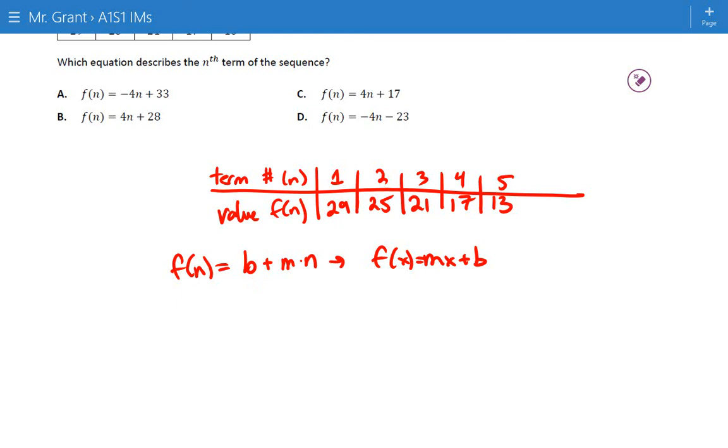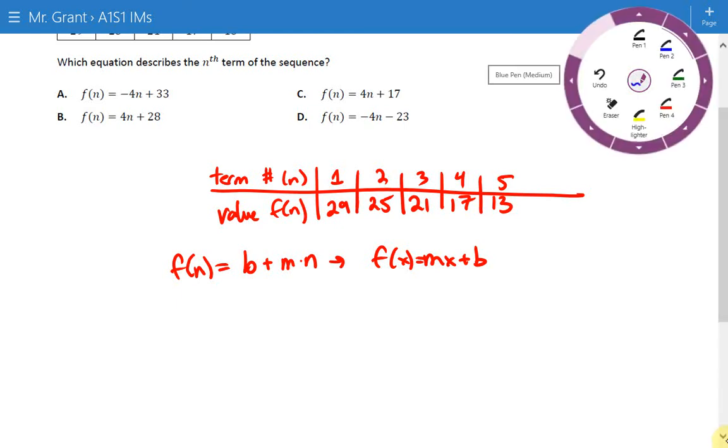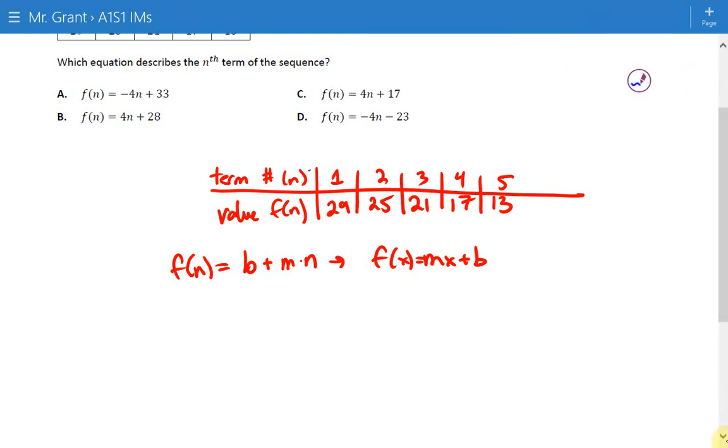b, the base number of blocks, is always found by looking at the zeroth term, which is actually the term right before 1. So if we look at the zeroth term, we have to use the pattern to work backwards. So if you work backwards, we should notice maybe that we're adding 4 every time. So when we add 4 to 29, that gives us 33. What that tells us is we're starting with a base of 33 blocks.